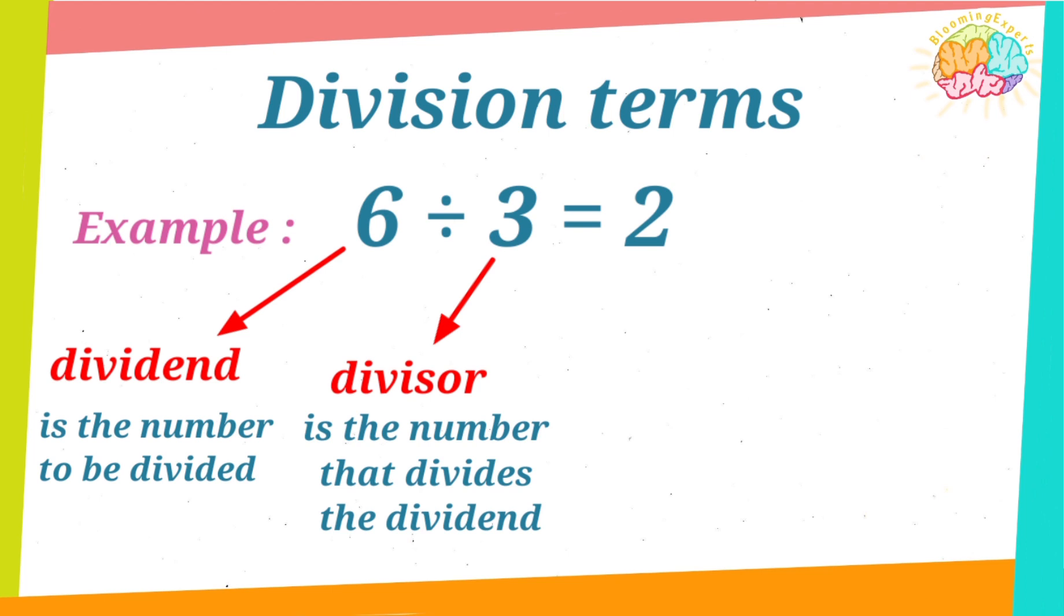And 2 is the answer of division. It's called the quotient. So, it is the result of division.